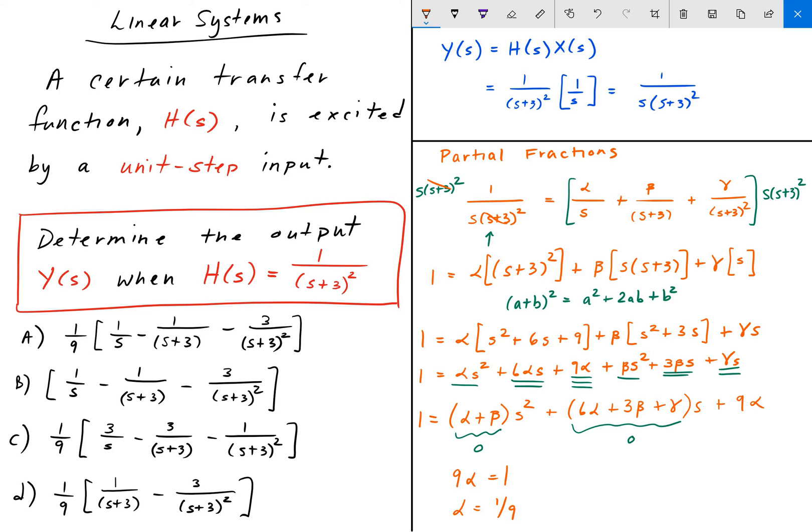And knowing that alpha equals 1/9, we can plug it into this equation here and solve for beta. So we know that alpha + beta equals 0. So that means that alpha equals minus beta, which is equal to 1/9. So that gives us that beta equals -1/9. And now that we know alpha and beta, we can solve for gamma by plugging it into this equation here. And when you do it all out, you get that gamma equals -1/3.